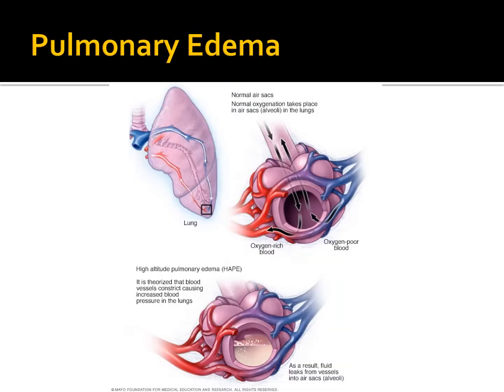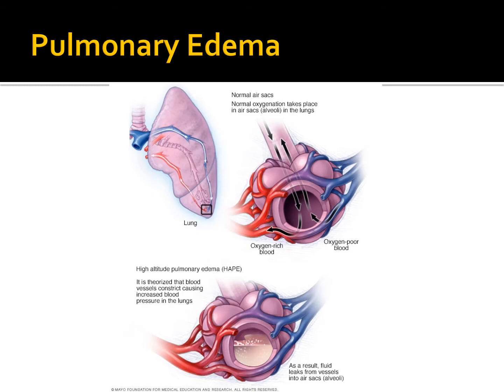In pulmonary edema, your lungs start to lose the ability to dispense fluids within the vesicles, so they begin to build up and you essentially drown in your own bodily fluids — the result of having a lack of oxygen for the system to function properly. The earliest recorded instance of high altitude pulmonary edema comes from a Buddhist missionary in 330 A.D.: 'They suddenly encountered a cold wind which made them shiver and unable to speak. Hui Ring could not go any farther. A white froth came from his mouth and he said: I cannot live any longer. Do immediately go away that we do not all die here. And with these words he died.'